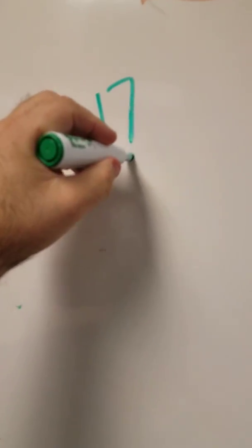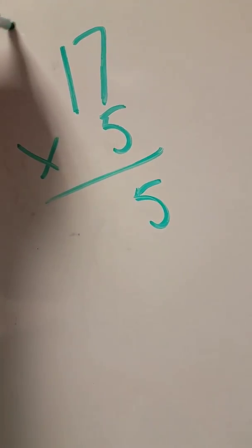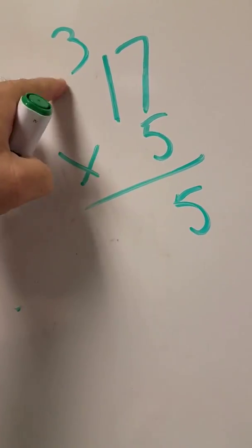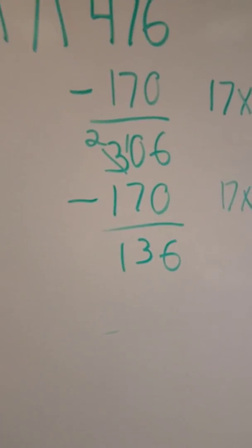What if I did 17 times 5? So over here, I'm just going to see, what is 17 times 5? 7 times 5 is 35. 5 times 1 is 5 plus 3 is 8. Can I take 85 away from 136? The answer is yes.